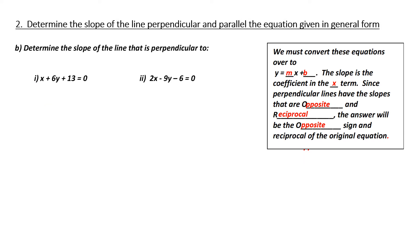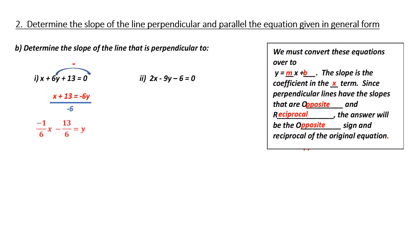Determine the slope of the line that is perpendicular to this equation written in general form. What do I know about perpendicular slopes? They are opposite and reciprocal. So, in order to find the original slope, I'm going to convert this to slope-intercept form. I need to isolate for y, so I'm going to subtract 6y from both sides, giving me x plus 13 equals negative 6y. I now need to isolate for y by removing negative 6, so I'm going to divide both sides by negative 6.